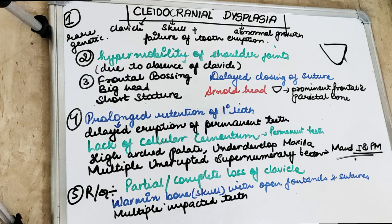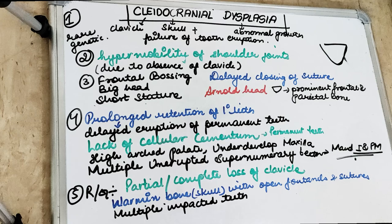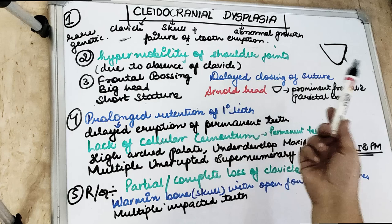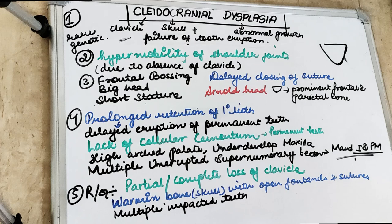To summarize cleidocranial dysplasia: the clavicle is absent or hypoplastic, there is abnormal growth of the skull, and there is failure of eruption of the teeth. Because of absent clavicles, the patient can approximate their shoulders and there is hypermobility of the shoulder joint.